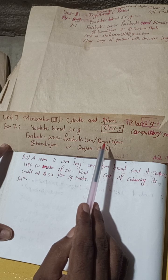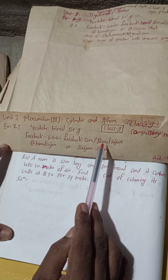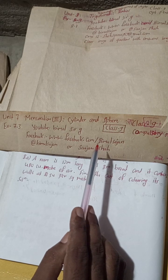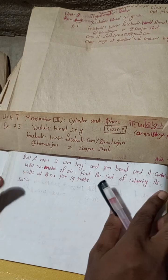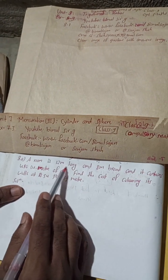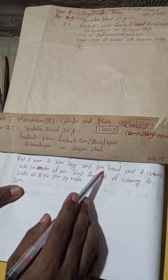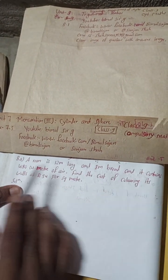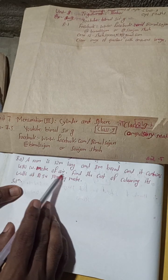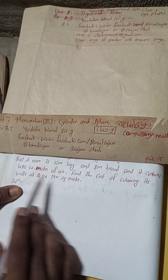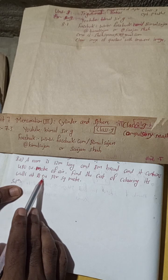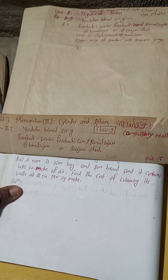If you haven't subscribed, please subscribe to this channel so that you can get most of your solutions here. Now let's begin this solution. A room is 12 meters long and 8 meters broad and it contains 480 cubic meters of air. Find the cost of coloring its walls at Rs 54 per square meter.